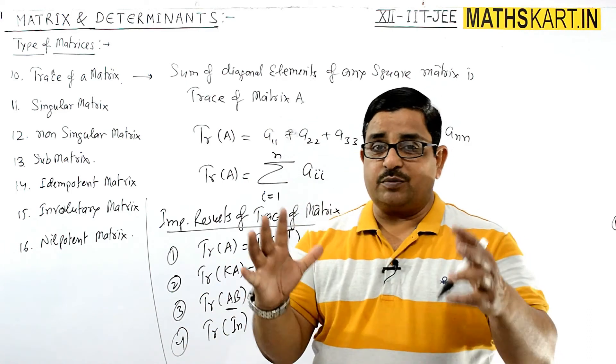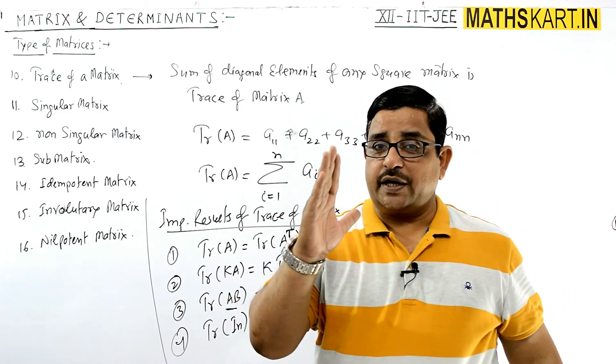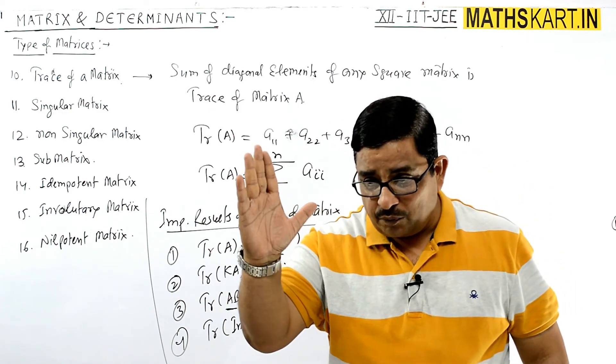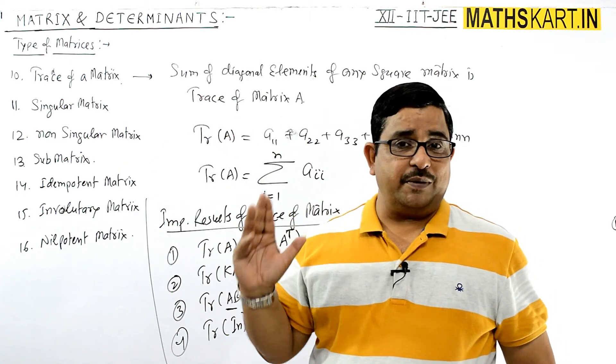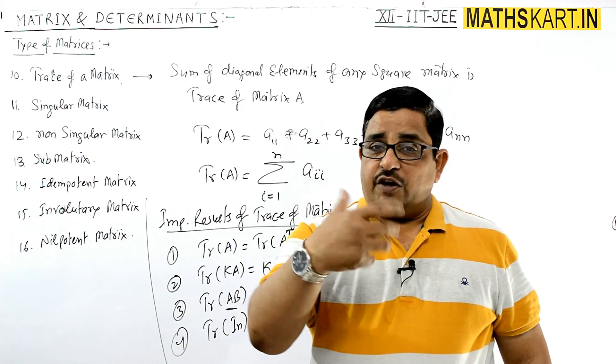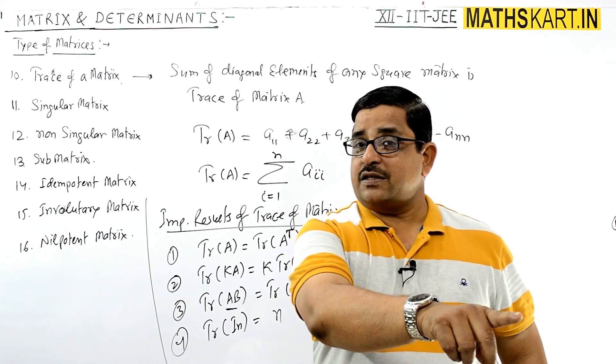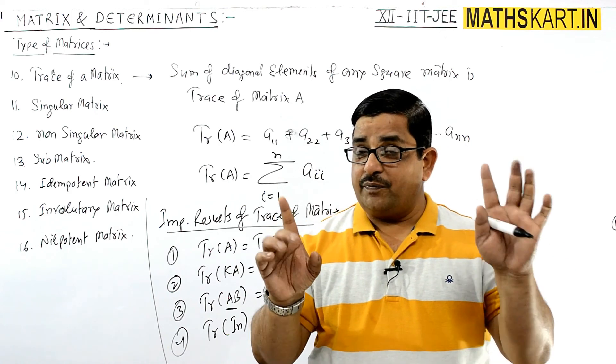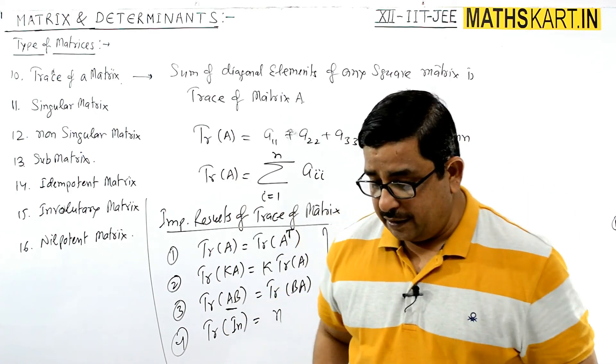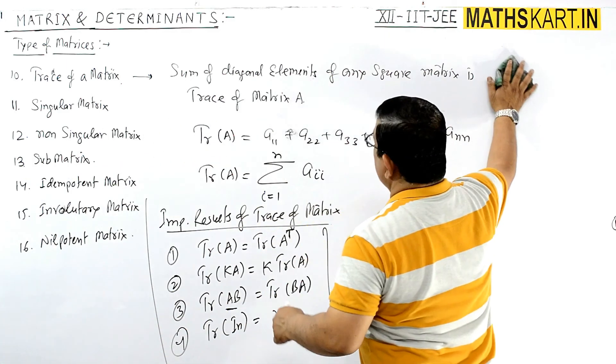But in the determinant, if you multiply any determinant by k, then by multiplying any row or column it becomes k times. This is the important property - there's a big difference: in determinant, multiplying any row or column by k makes it k times of that determinant, whereas in matrix you have to multiply each element to get k times of any matrix. This is the major difference between matrix and determinant. After this, next property is singular matrix.